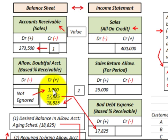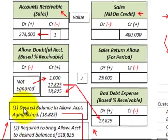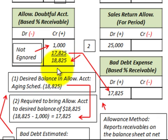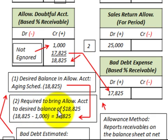In our case, we have a $1,000 credit amount already sitting in this allowance account, and that's a key number we have to look at. We have to determine what our year-end balance is going to be. We know from our aging schedule that the year-end balance has to be $18,825 — the amount we're estimating we won't be able to recover. So it's required to bring the allowance account up to $18,825: we take $18,825 less the existing balance of $1,000, giving us $17,825.